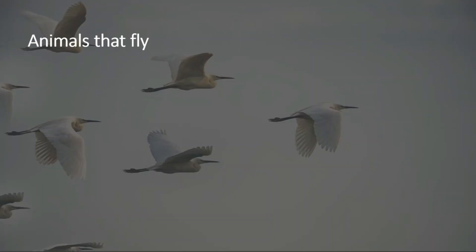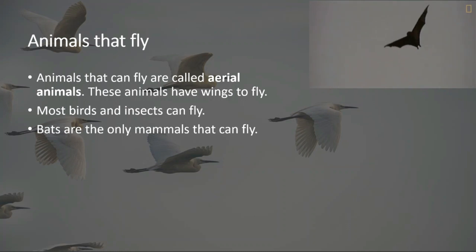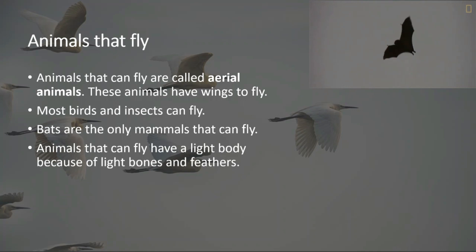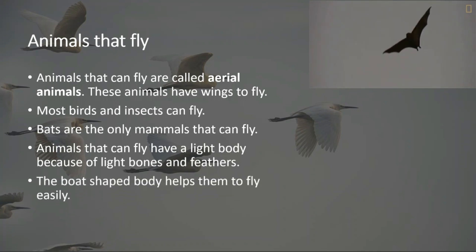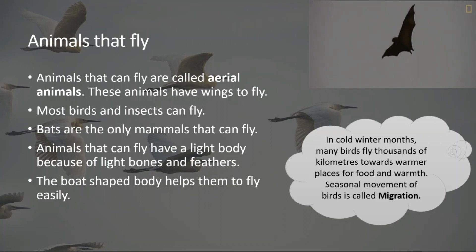Animals that can fly are called aerial animals. These animals have wings to fly. Most birds and insects can fly. Bats are the only mammals that can fly. Animals that can fly have a light body because of light bones and feathers. The boat-shaped body helps them to fly easily. In the cold winter months, many birds fly thousands of kilometers towards warmer places for food and warmth. They fly back to their homes when winter ends. This seasonal movement of birds is called migration.